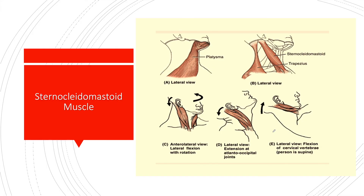Another bilateral action: if you fix your head and then perform forced deep inhalation, the clavicular and manubrial heads — because the manubrial head is in the longitudinal axis of the muscle — elevating the sternum increases chest volume. So the sternocleidomastoid also acts as an accessory muscle for inspiration.